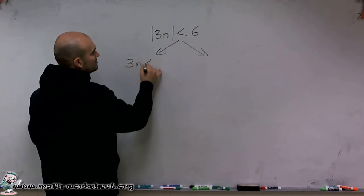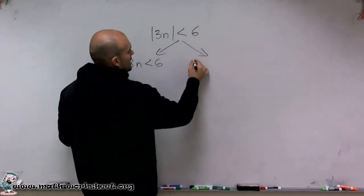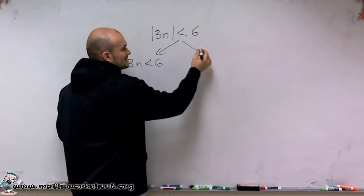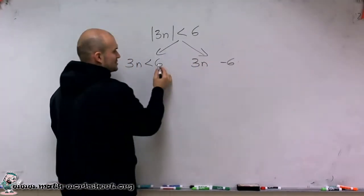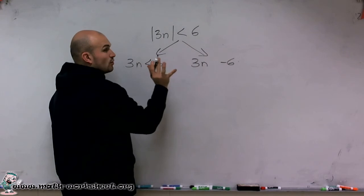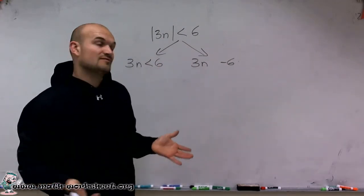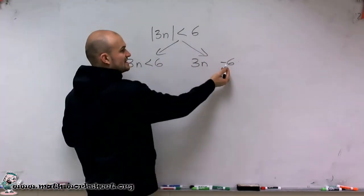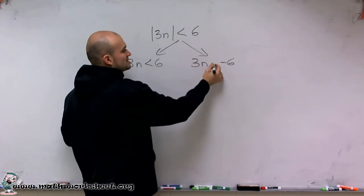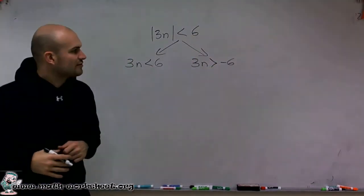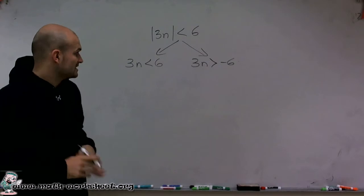I'm going to do 3n is less than 6, and then 3n is the negative 6. So you could have 6 or negative 6. But the important thing with inequalities, just like when we multiplied and divided by negative 1, since I'm now producing this negative answer, I'm going to flip the sign. So now write this as 3n is greater than negative 6.